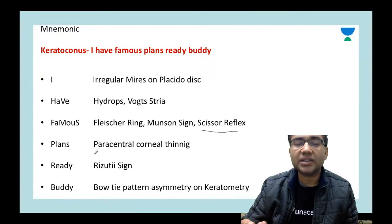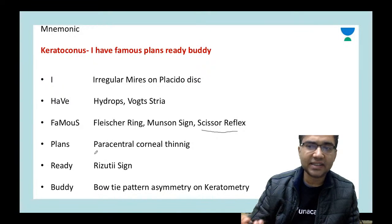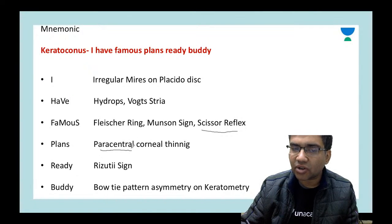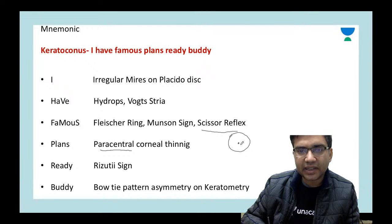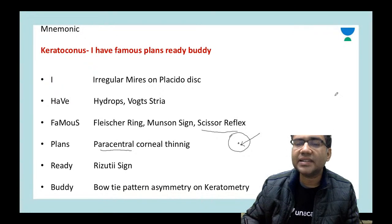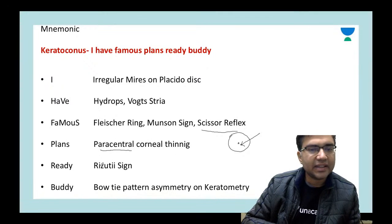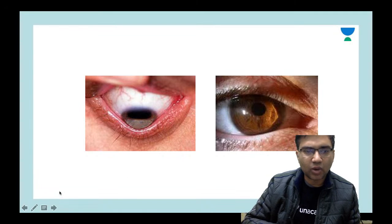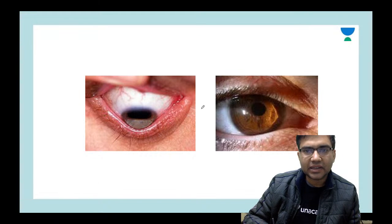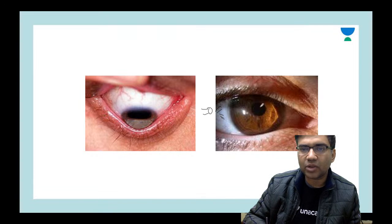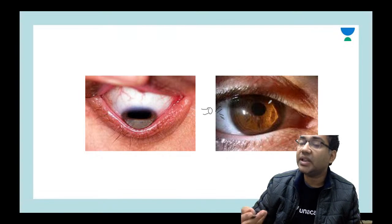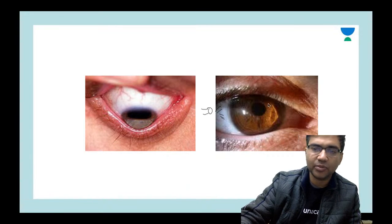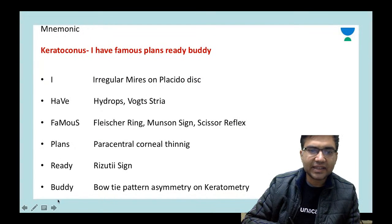Normally the central corneal thickness is least at the center, but in a patient of keratoconus the thinnest point is just paracentral — the area just inside the center of the cornea. This is called paracentral corneal thinning. Then we have Rizzuti's sign: when light is placed from the temporal quadrant, more than half of the iris is illuminated, because keratoconus creates a deep anterior chamber.